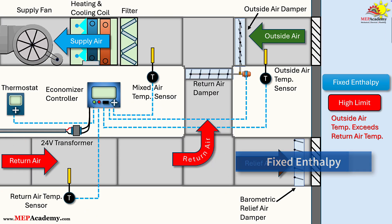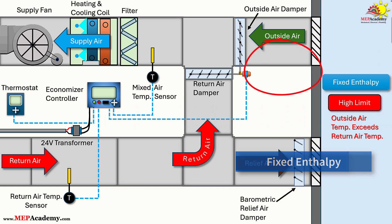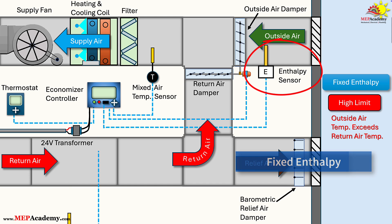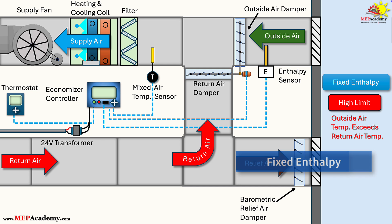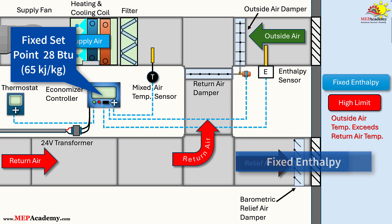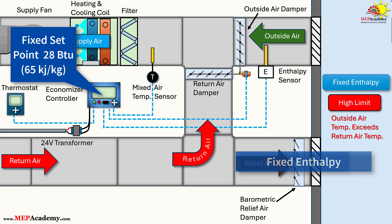Fixed Enthalpy Strategy. The first thing we'll need to do is swap out the dry bulb temperature sensor with a combination dry bulb temperature and humidity sensor. The fixed enthalpy strategy accounts for both temperature and humidity by measuring the outdoor air's enthalpy – total heat content – and comparing it to a fixed enthalpy set point, typically around 28 BTU/lb (65 kJ/kg), which corresponds to conditions like 75°F at 50% relative humidity. If outdoor enthalpy exceeds this value, the economizer disables. This requires enthalpy sensors or a combination of temperature and humidity sensors to calculate enthalpy.